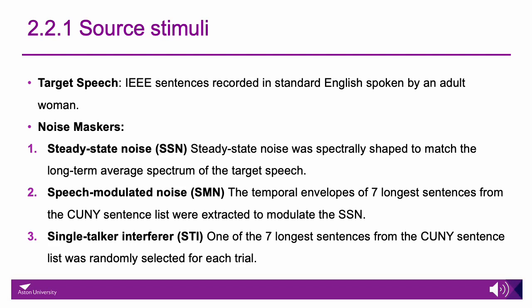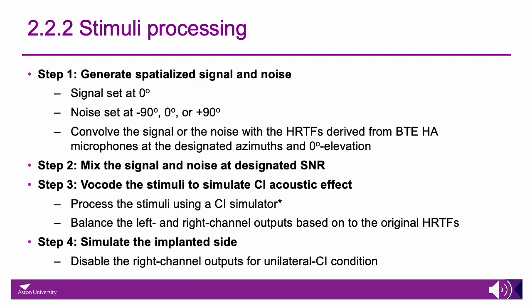We use the IEEE sentences as the target speech and include a steady-state noise specially shaped to match the long-term average spectrum of the target speech. We then modulate the noise using the speech envelope of seven sentences from the CUNY sentence list, and use those same seven CUNY sentences as the single talker interferer. To process the stimuli, we convolve the signal and noise with HRTFs derived from a behind-the-ear hearing aid microphone, mix them at a designated signal-to-noise ratio, and then vocalize the stimuli to simulate cochlear implant acoustic effects. The right channel output is then disabled for the unilateral cochlear implant condition.